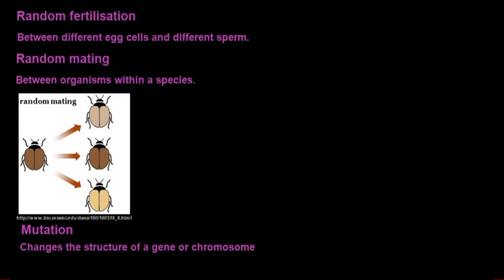Random fertilization is also a form of variation between different egg and sperm cells that may fuse. In humans, one egg cell is released but millions of sperm cells could potentially fertilize that egg, but only one is the winner. As an example, it can be a girl or a boy based on the chromosomes the sperm cell carries, and different things based on genetics can also lead to variation. Random mating between organisms within a species - this beetle could potentially have three different mates each with unique characteristics.